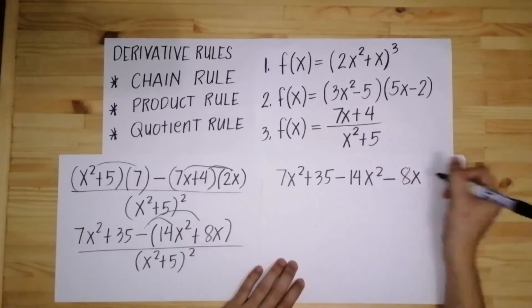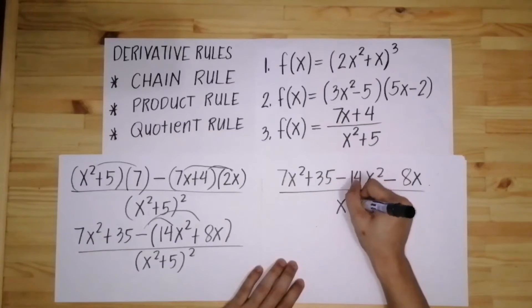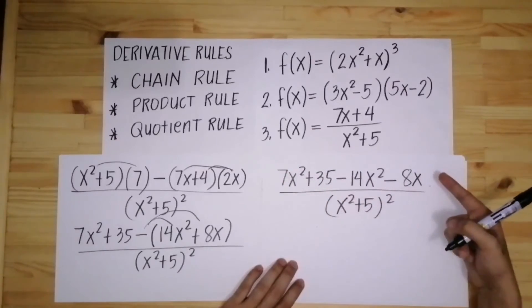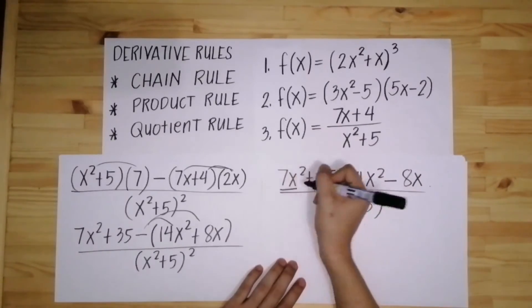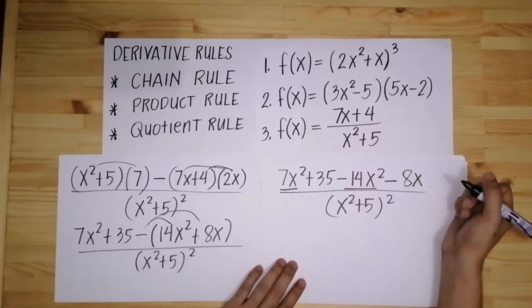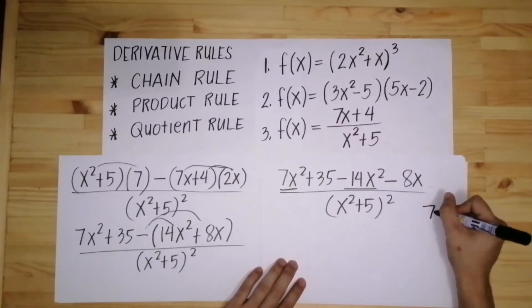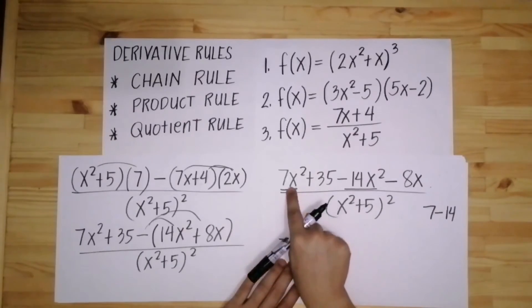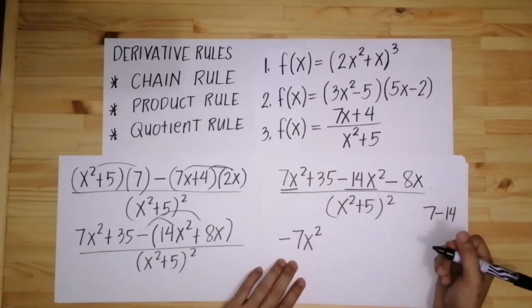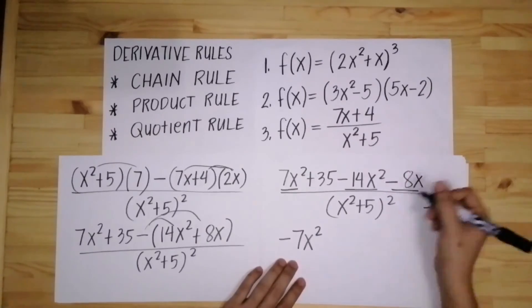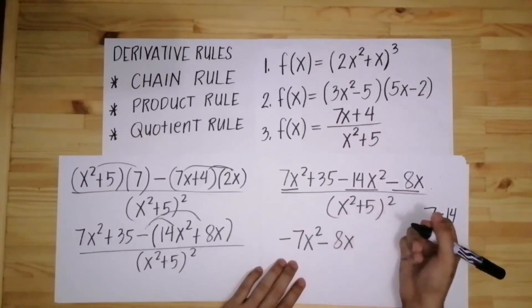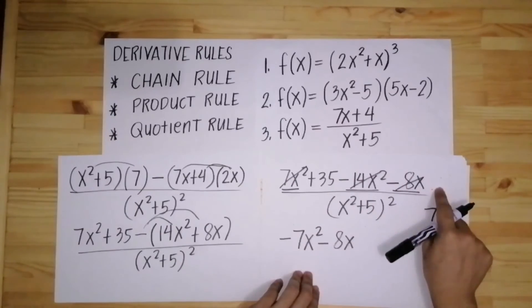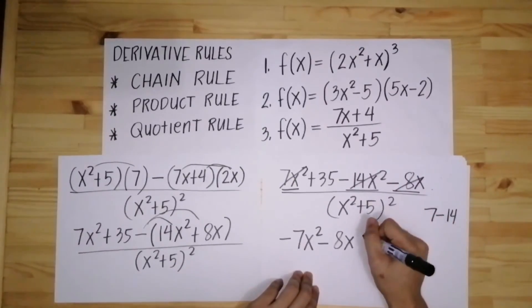Then all over x squared plus 5 quantity squared. Pag-samayin lang natin sa taas yung magkakaparehas, yung similar terms. 7x squared will be combined with negative 14x squared. 7 minus 14 equals negative 7x squared. Then itong negative 8x unahin natin, negative 8x, then plus 35 all over x squared plus 5 quantity squared.